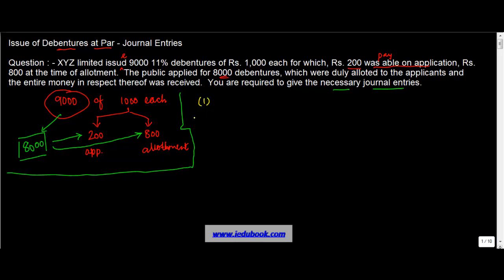Just like for the issue of shares, in the case of issue of debentures also, the first thing that will happen is you would make an offer. Once you have made the offer, there will be applications from the interested party. Once the applications are done, depending on who has applied, the applicants will be made an allotment. At the time of offer, there are no accounting entries.